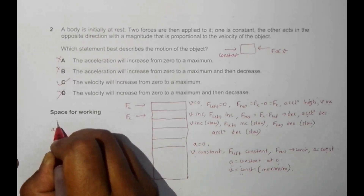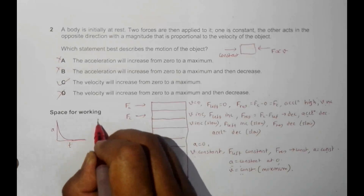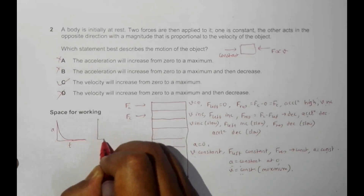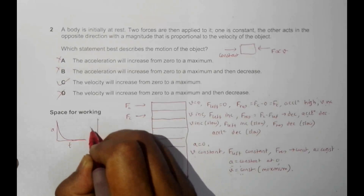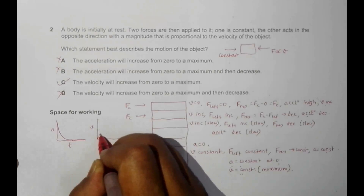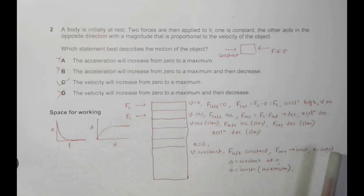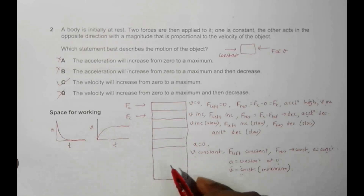The graph of A starts highest, then decreases and becomes zero. The graph of V starts at zero, increases, and ultimately becomes constant. So this problem, though it looks vague, is another way of explaining terminal velocity. Thank you.